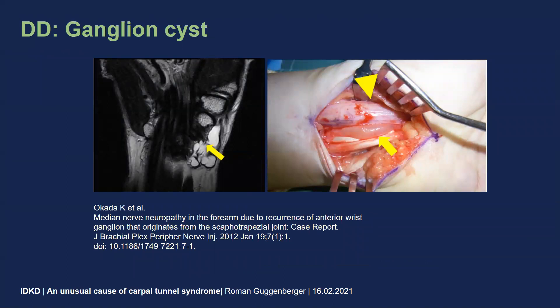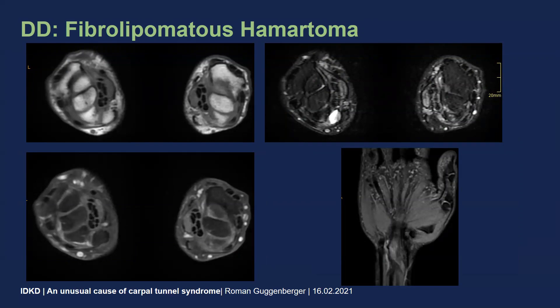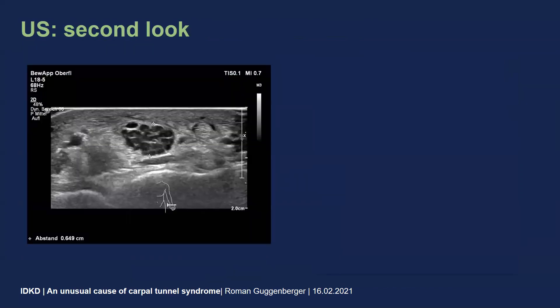Other reasons for carpal tunnel syndrome-like complaints would be space-occupying lesions in the carpal tunnel, like this polylobulated ganglion cyst which induces pressure on the median nerve. Other space-occupying lesions may occur in the nerve itself, like this fibrolipomatous hamartoma. If you have a look at the ultrasound image, this would very nicely fit to that diagnosis, where we see those enlarged fascicles of the nerve and an overall enlarged nerve caliber. We've also seen cases of fibrolipomatous hamartomas on both hands. However, this was not the case in the patient I'm discussing.